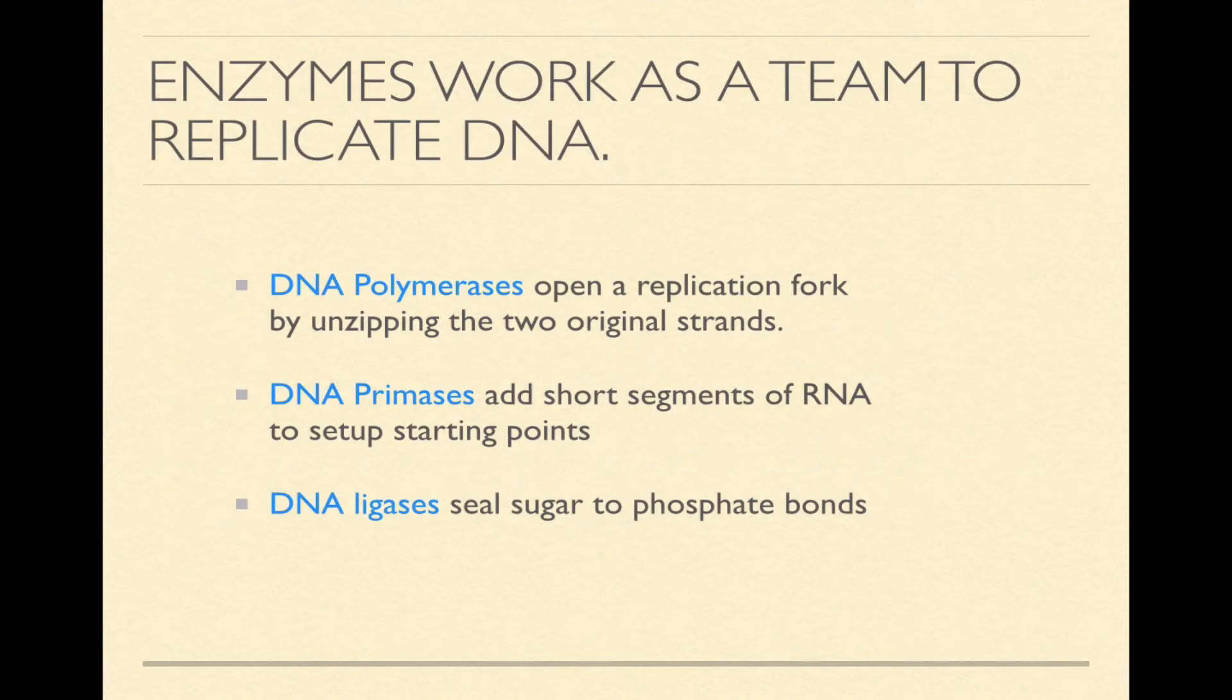Now the enzymes that do the DNA replication, there are three classes. One class is called DNA polymerase, and these are responsible for opening up something called a replication fork, which is where the unzipping takes place. So you can think of DNA polymerase as being like the tab on a zipper. So if you have a zipper, DNA polymerase is the one that you pull downward to open it up.